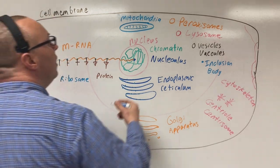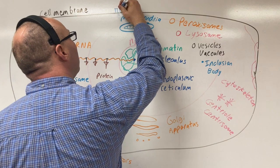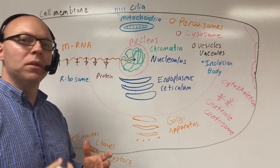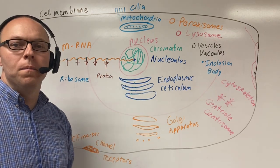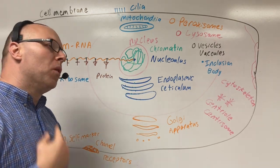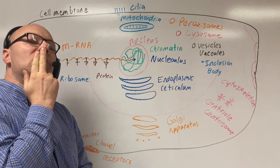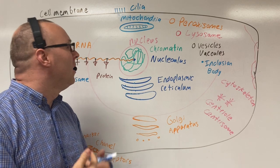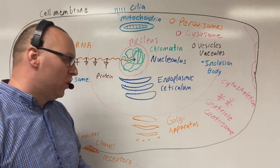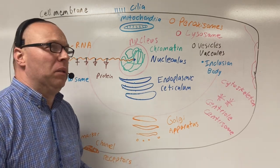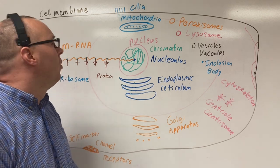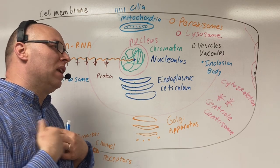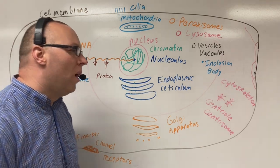Next, on our cell we're going to put some hair — this is cilia, and it helps move substances along the surface of the cell. If you're a smoker, one of the things that happens with cigarette smoke is the chemicals actually numb the cilia and paralyze them. Why? Because if you smoke and the cilia are working, they'd be constantly trying to clear out the junk.